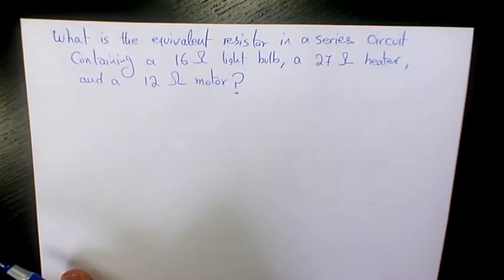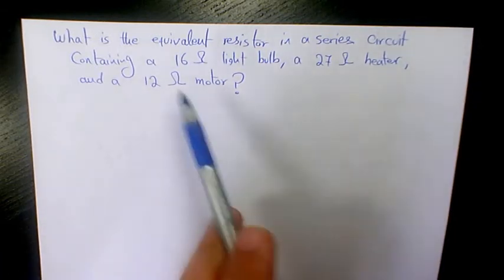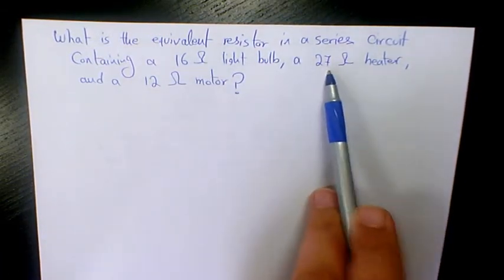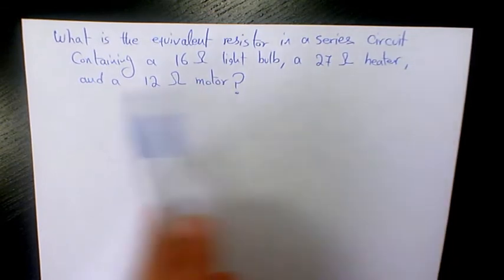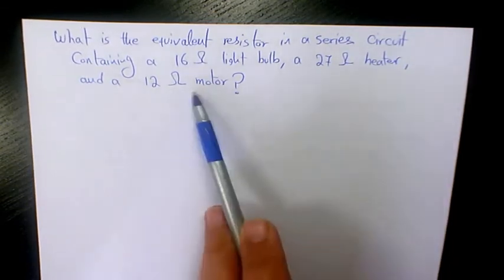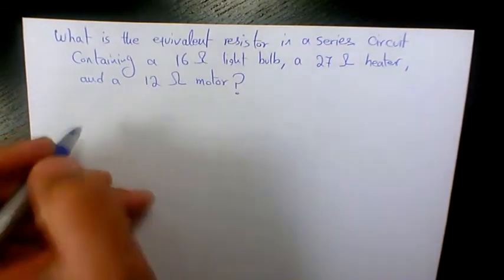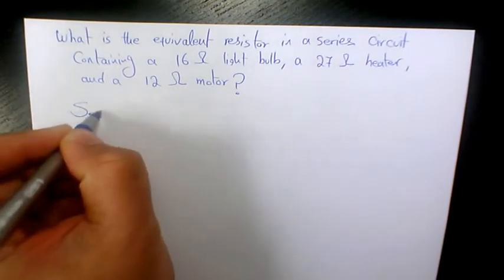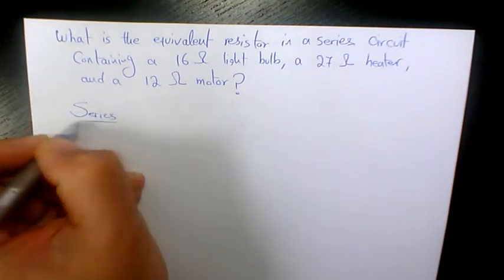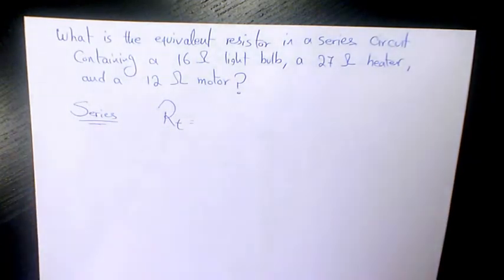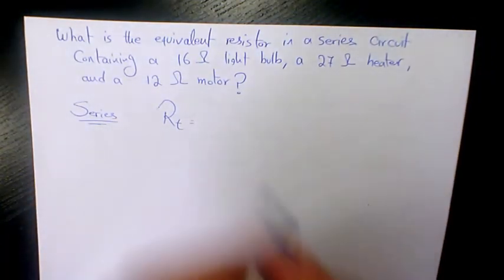What is the equivalent resistor in a series circuit containing a 16 ohm light bulb, 27 ohm heater, and a 12 ohm motor? Since we are dealing with a series circuit, the total resistance or the equivalent resistance is going to be the summation of all resistances in the circuit.